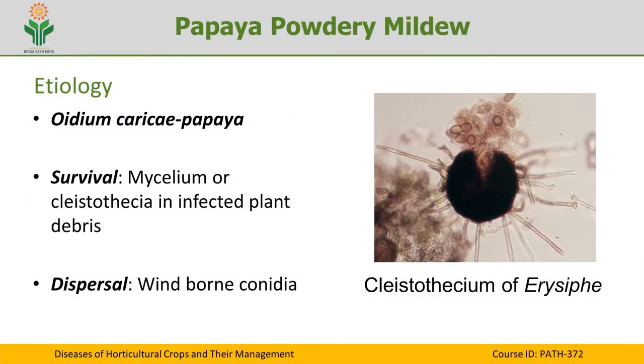This pathogen belongs to the Erysiphaceae of the subdivision Ascomycotina. The pathogen is capable of producing the cleistothecial stage as well as the conidial stage. The cleistothecial stage is produced by the perfect stage of the fungus known as Erysiphe cruciferarum. The Erysiphaceae is capable of producing many asci within a closed ascocarp known as cleistothecium. The different genera of powdery mildew fungi can be divided based on cleistothecial appendages. In Erysiphe, the cleistothecium contains many asci and the appendages are of mycelioid type.